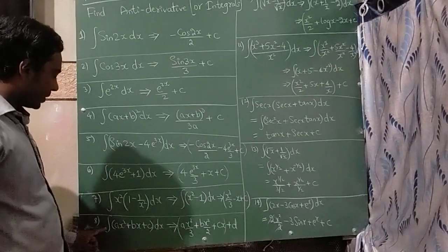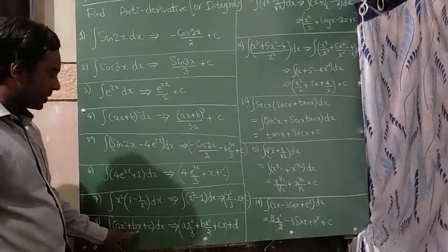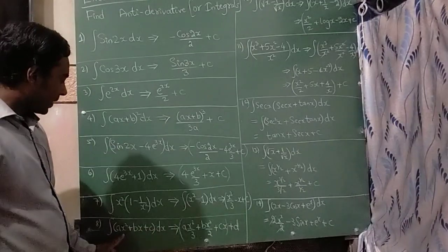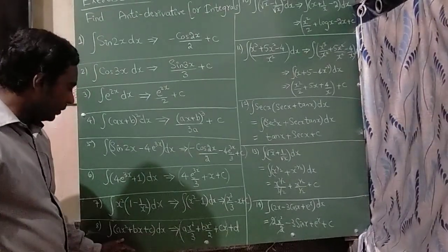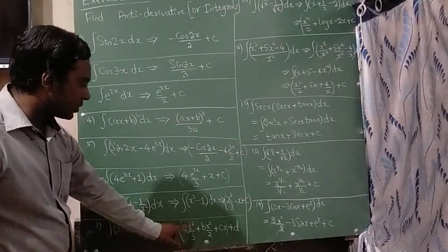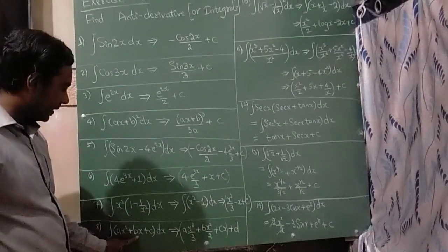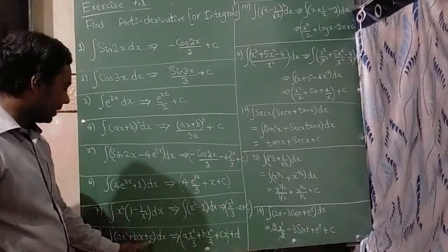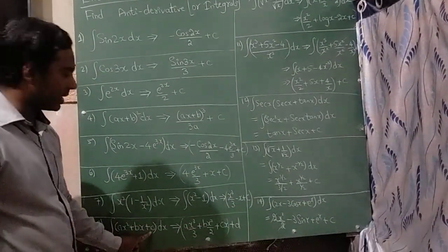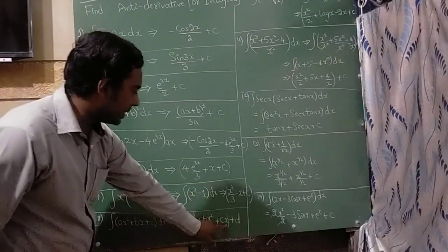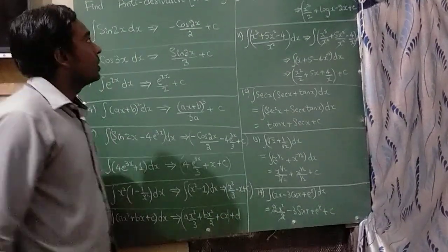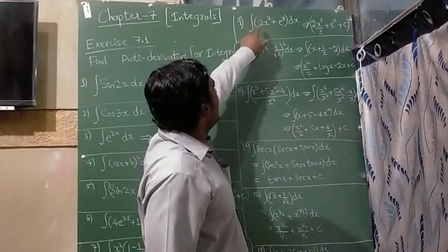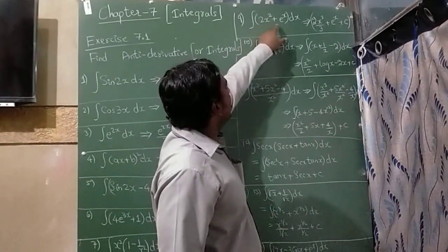The next question is integration of (ax square plus bx plus c) dx. Here integration of x square gives a times x cube divided by 3, integration of x gives b times x square by 2, and for the constant c you consider it as 1, so it integrates to cx, plus d.